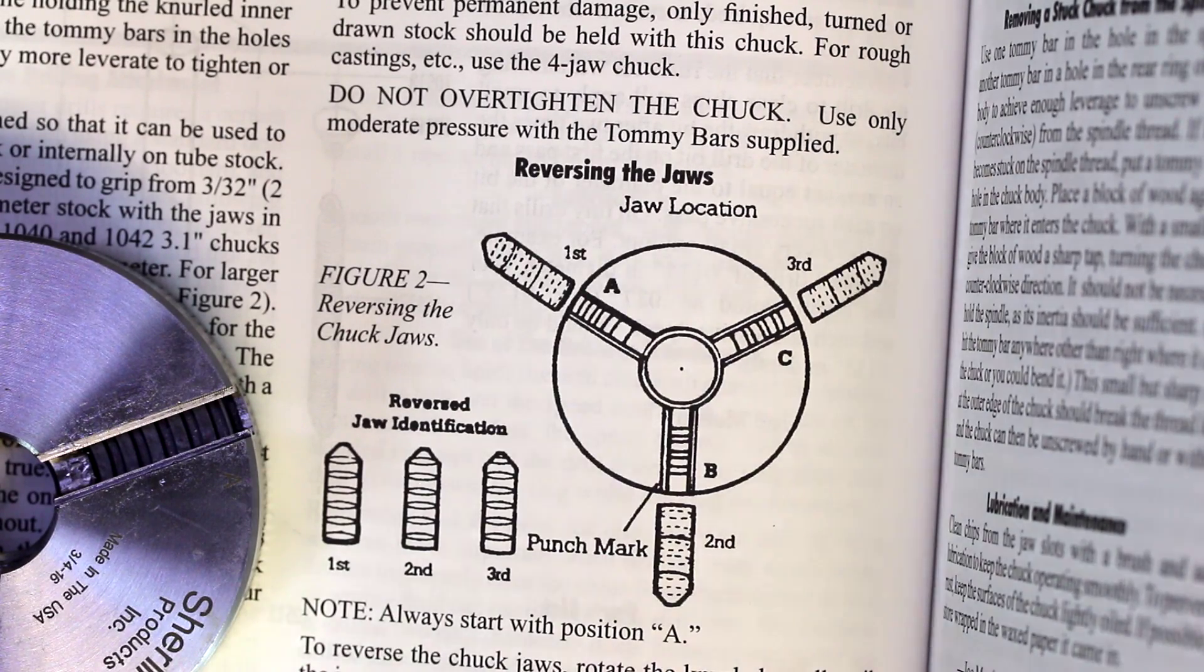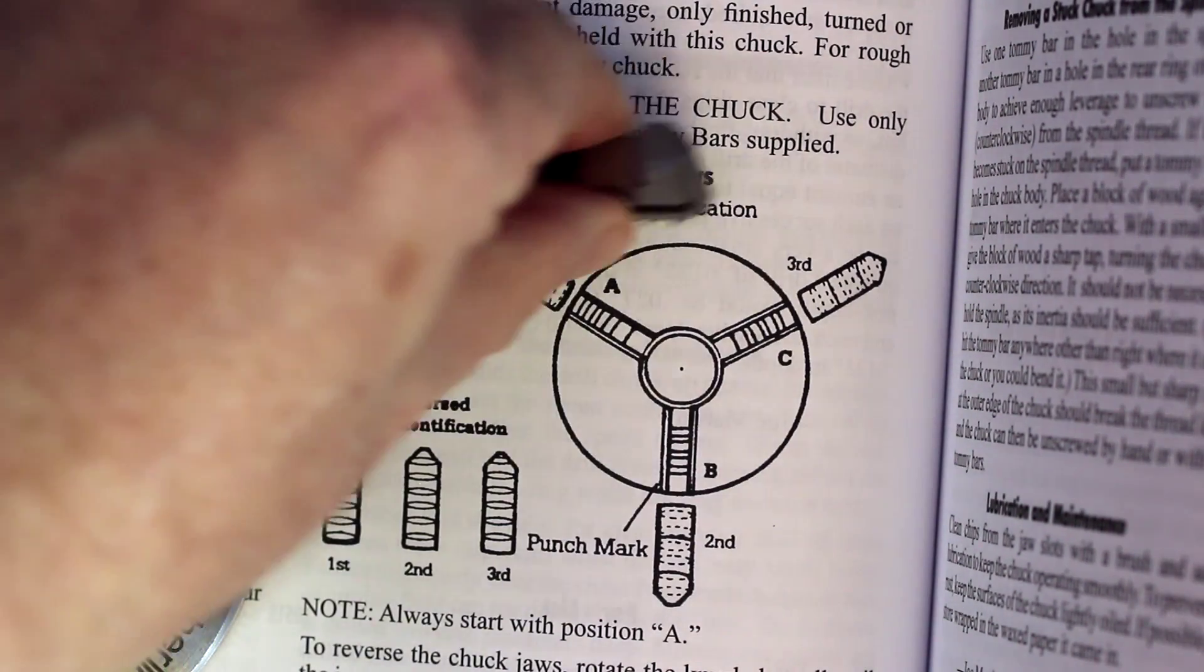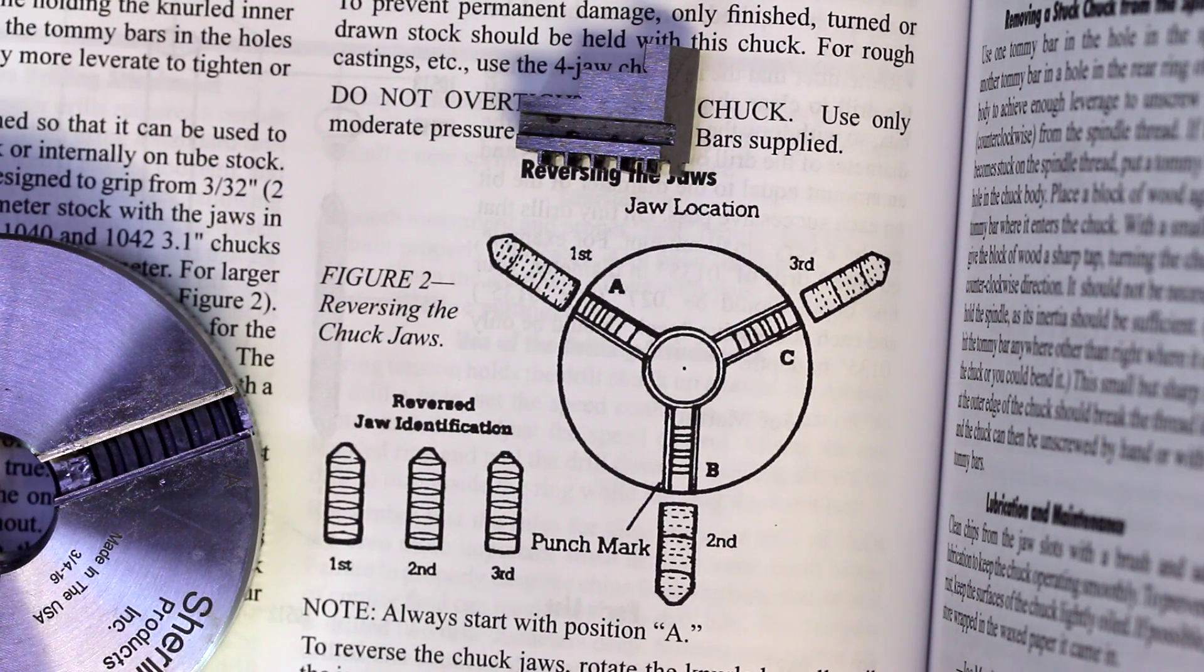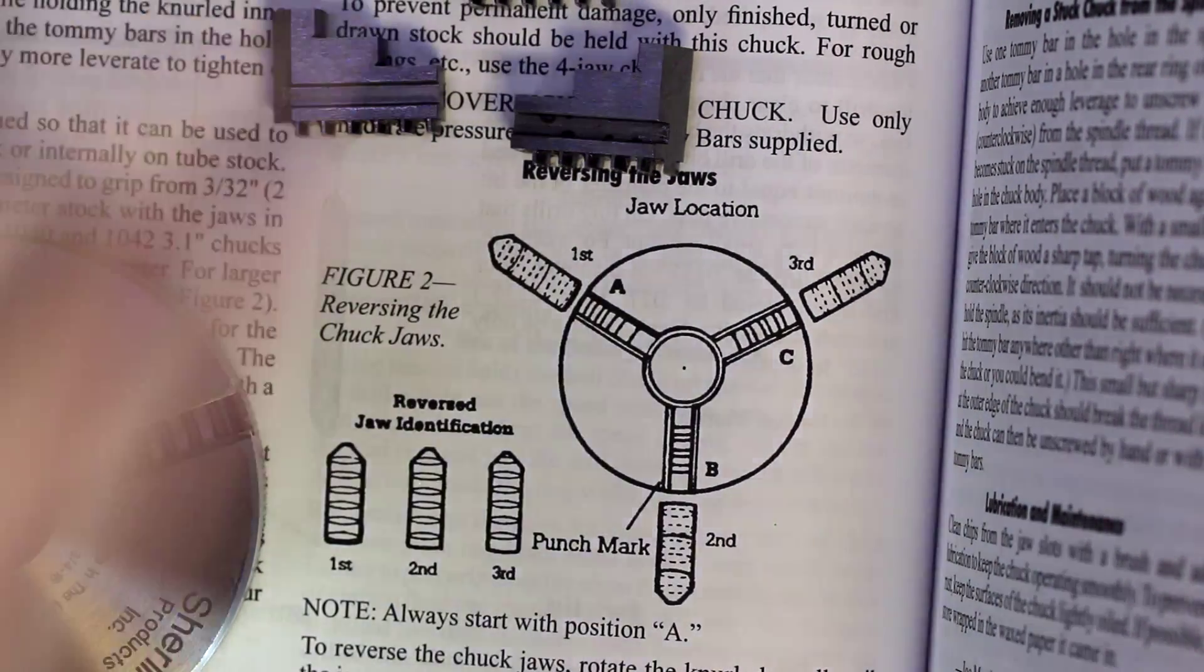So now when it comes time to reassemble the jaw, whether you're putting it back in the standard method as we took it apart or the reverse method as we're going to demonstrate here, this is where the instructions really do come in handy. Because it can get a little bit confusing, particularly with jaws that are designed for both inside and outside use, not dedicated internal and external jaws.